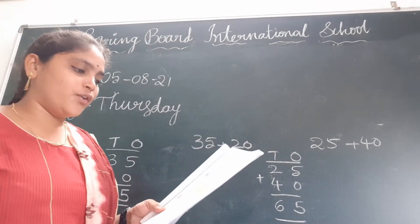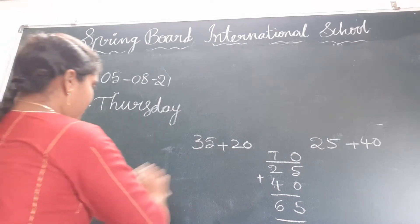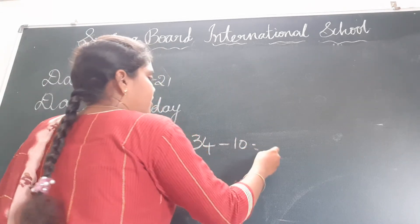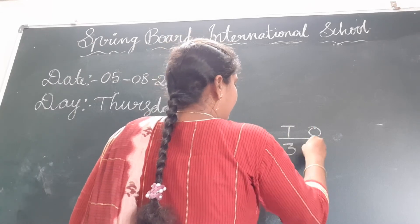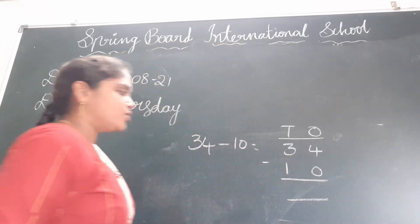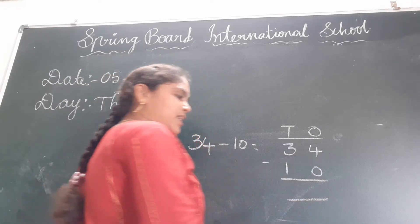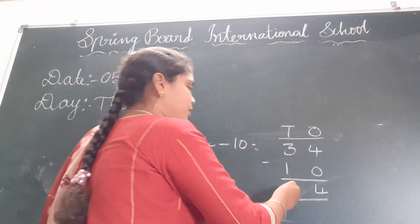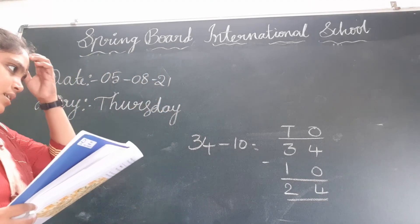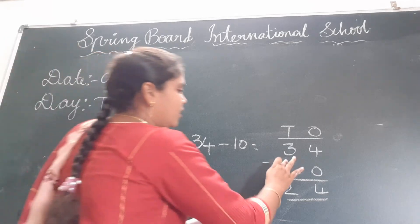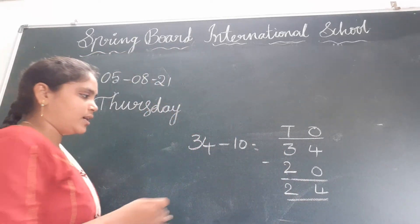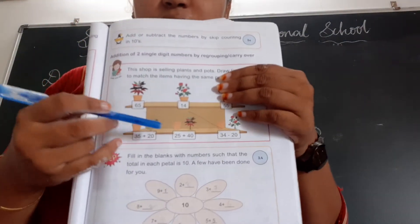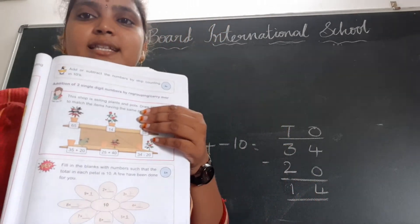Next: 34 minus 20. You have to do subtraction here. 4 minus 0 is 4 — subtracting 0 from any number gives the same number. And 3 minus 2 is 1. So the answer is 14. Where is the number 14? Match it with 14. Like this, you have to complete the matching activity.